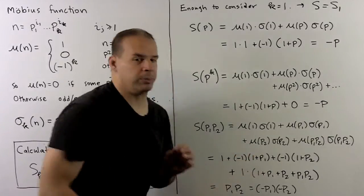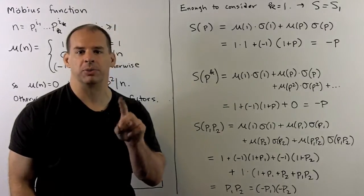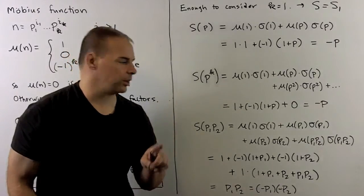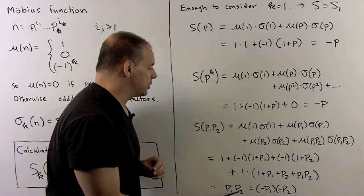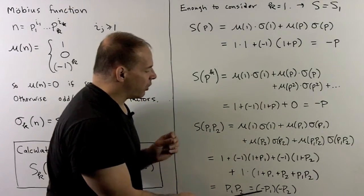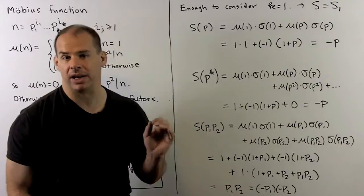Then the sum of the divisors of p1 p2 is 1 plus p1 plus p2 plus p1 p2. When we work this out, we get p1 times p2. And to make this suggestive, I write it as minus p1 times minus p2.